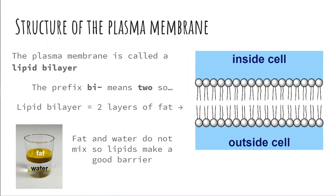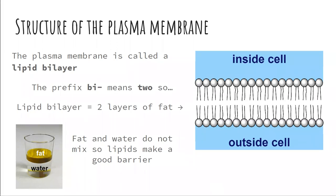The plasma membrane is considered a buffer because it's a good barrier. It serves as a great barrier between the inside of the cell and the outside of the cell. Your cell membrane is made up of fats with proteins embedded, but it's made up mostly of fats because fats and water do not mix. So it serves as a good buffer or barrier, and it's able to keep the contents of the inside of the cell separate from the contents of the outside of the cell.